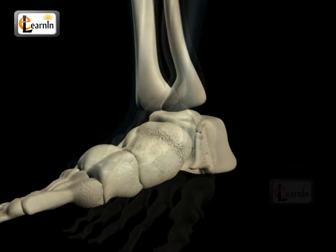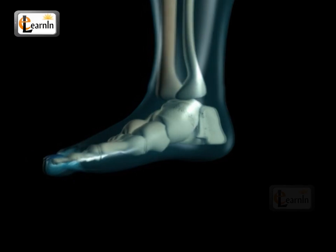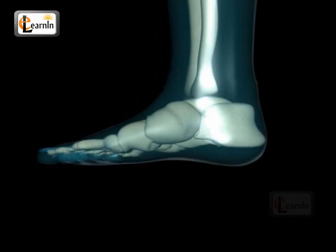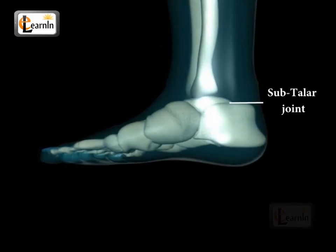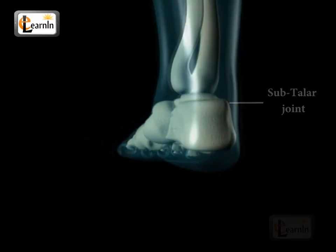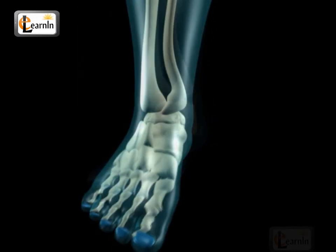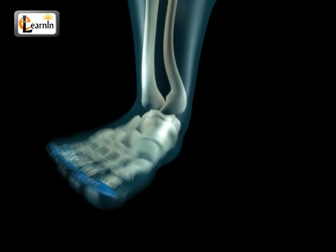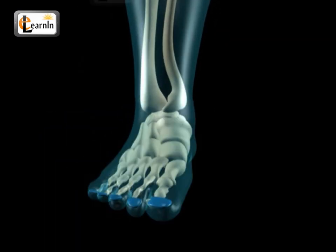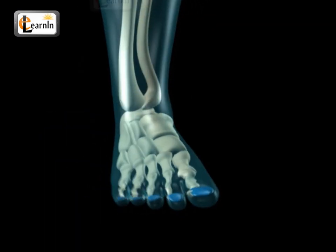The joint formed between the talus and the calcaneus is known as the subtalar joint, which helps in the normal functioning of the foot. It allows the foot to move from side to side.